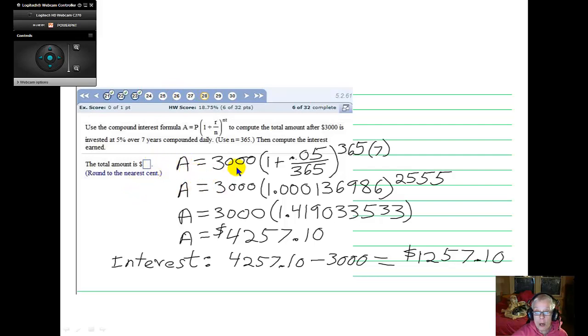Our P is $3,000, our interest rate is 5%, which is .05, N is 365, and the number of years is 7. 7 times 365 is 2,555, what an exponent. So I calculate the number inside the parentheses, I then raise it to the 2,555th power, I then last multiply by the P number, and I come up with $4,257.10.